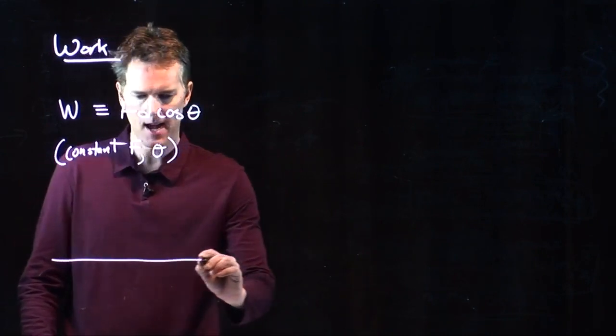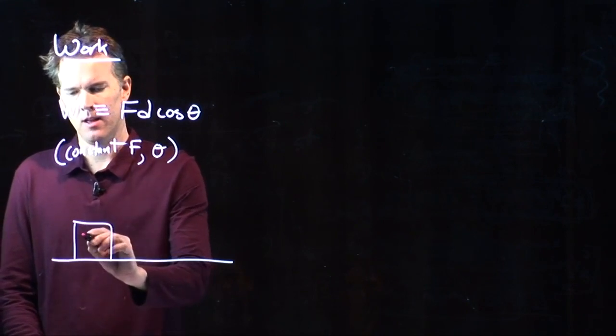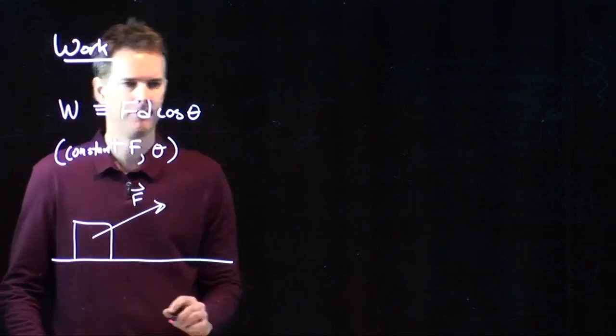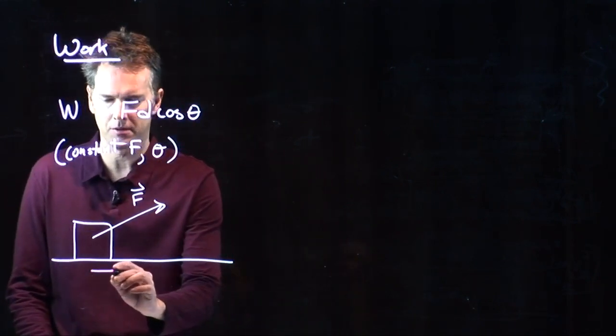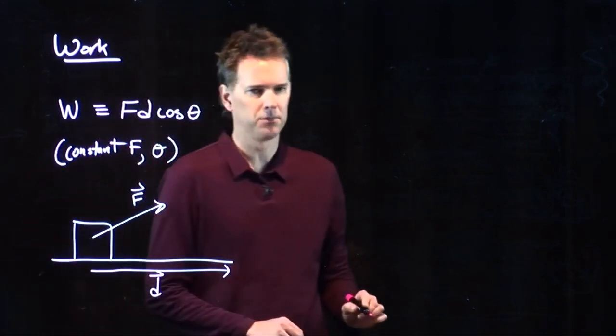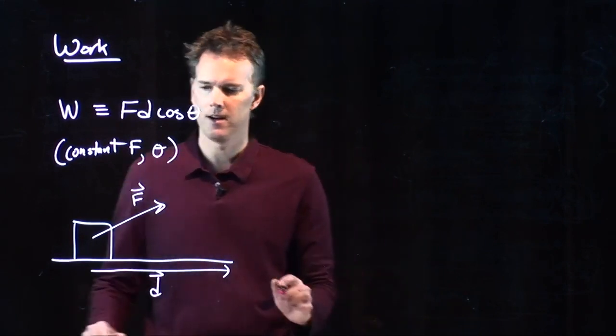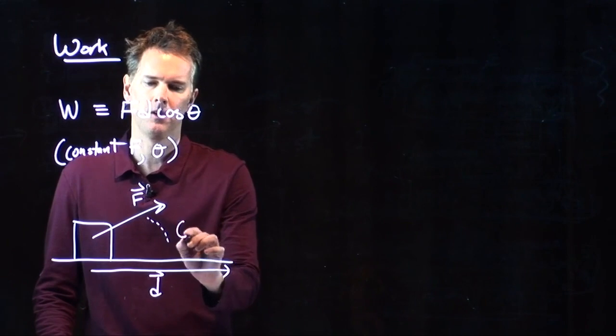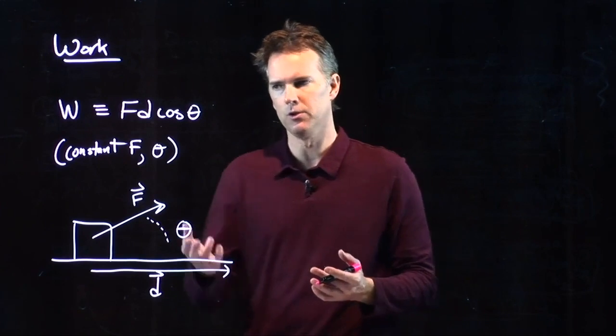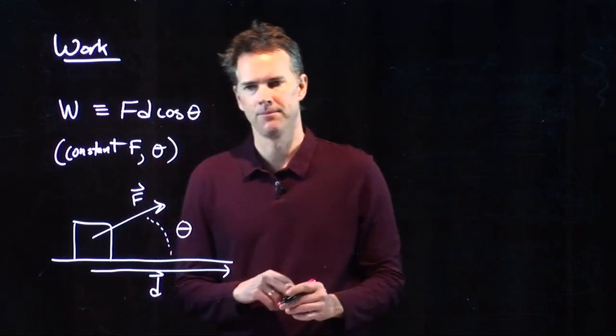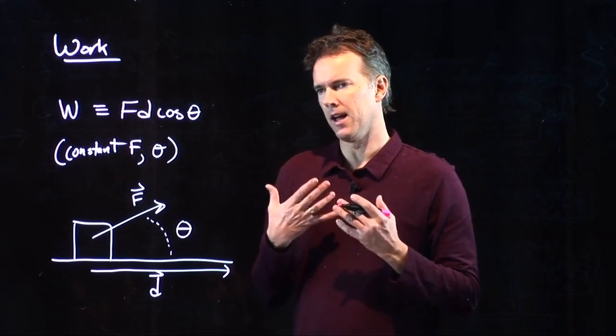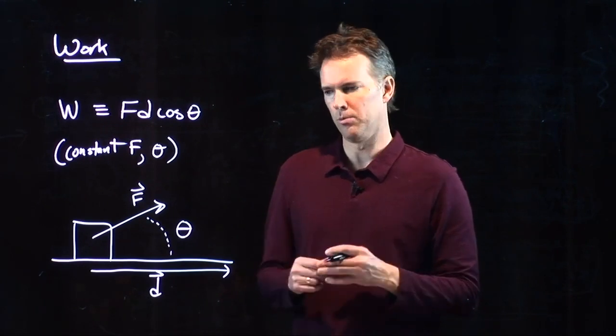Okay, what does this mean? It means the following. Let's say I take a box and I'm going to pull on that box with a force F and the box is going to slide across the ground a distance D. D is a displacement, and so we put a vector sign on it. And the angle between those two is what we call theta. How much work do you do on the box? You do F D cosine theta.